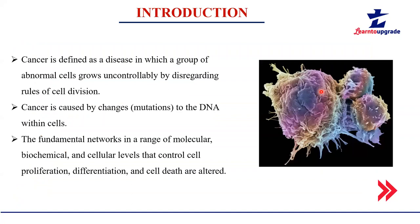Coming to the introduction, cancer is a disease where we find abnormal growth of cells. Simply put, cells in your body multiply so enormously and rapidly that it leads to abnormal cell growth, which we call cancer. Cancer is nothing but abnormal cell division in our body, occurring because of certain mutations in your DNA.